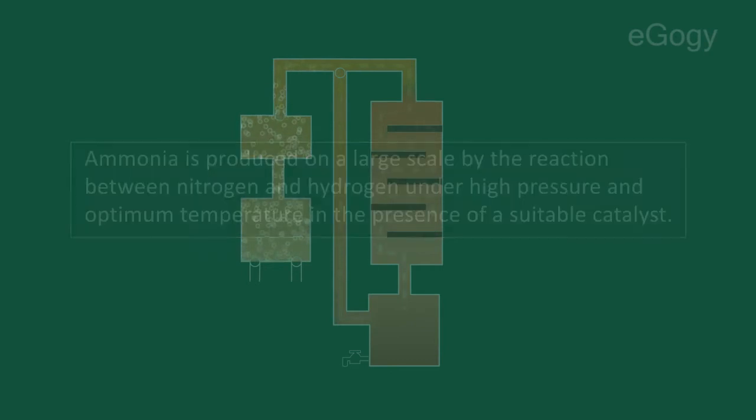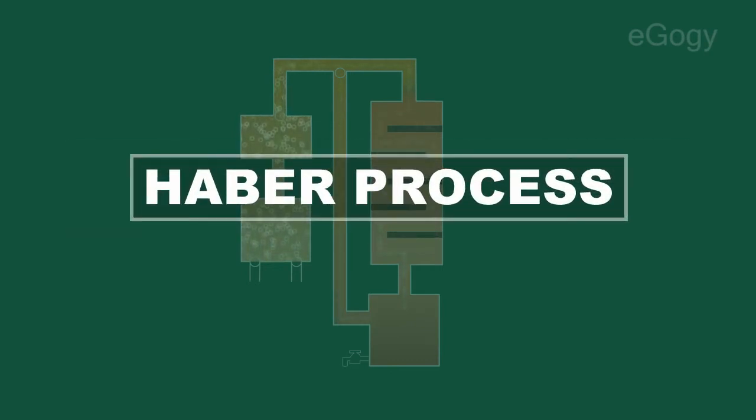This method is known as the Haber process. Hydrogen is obtained by reacting methane with steam or through the cracking of oil, and nitrogen by fractional distillation of air.